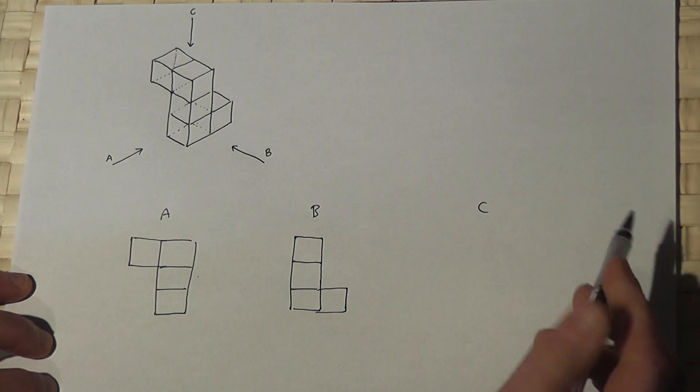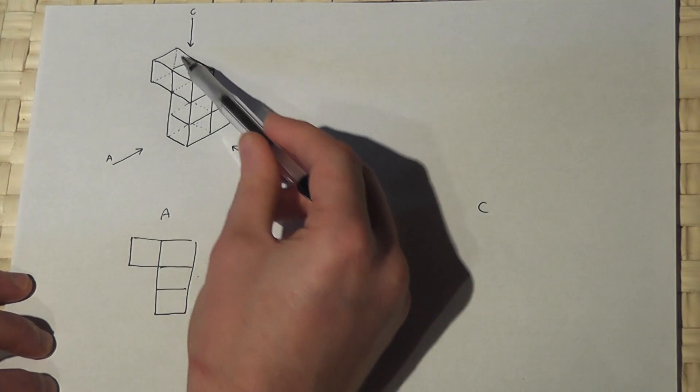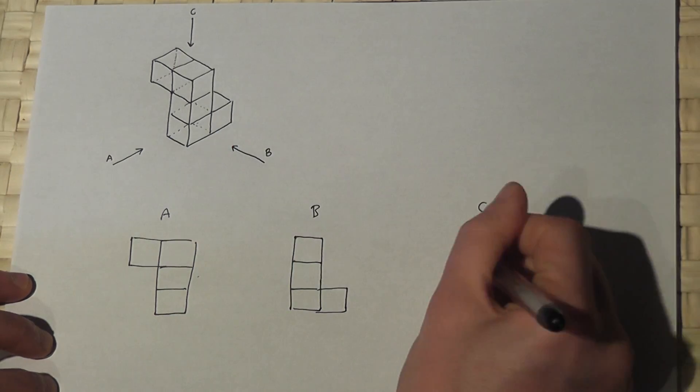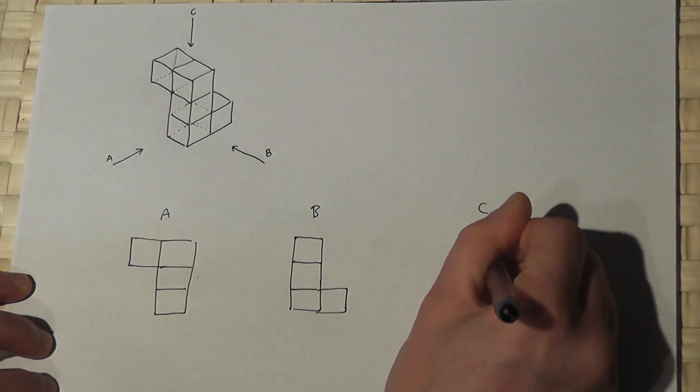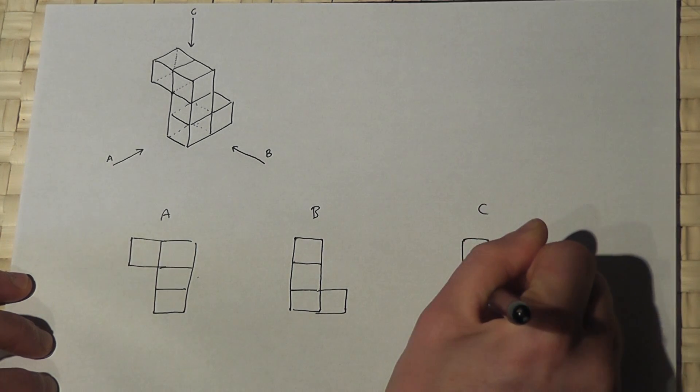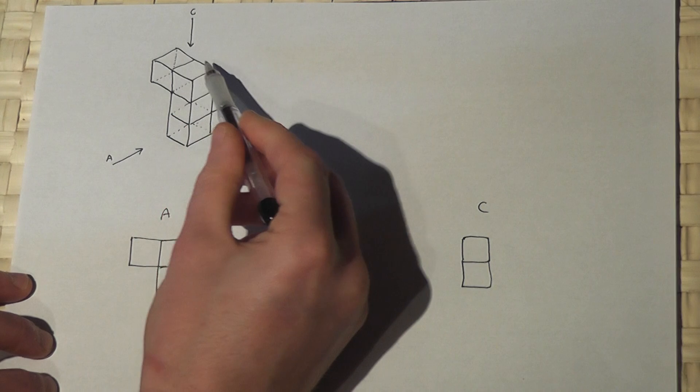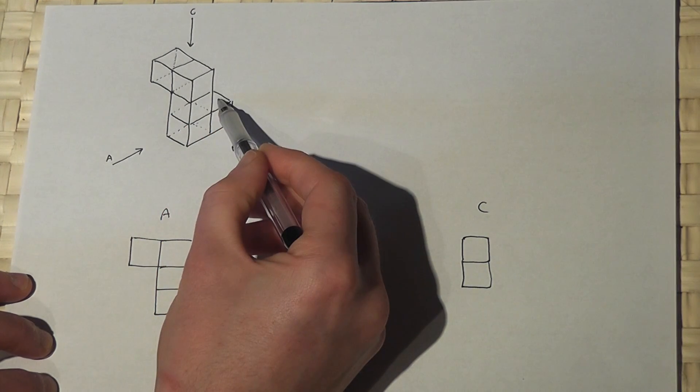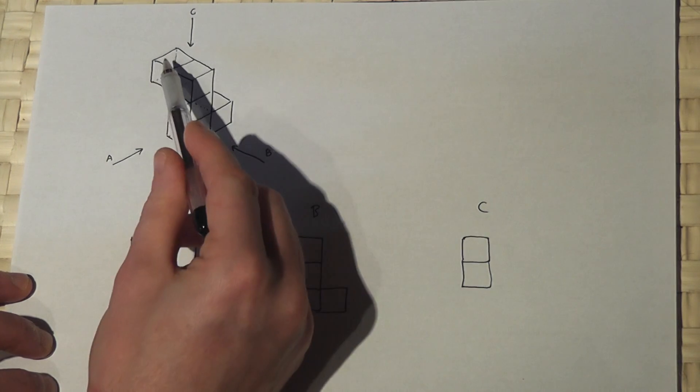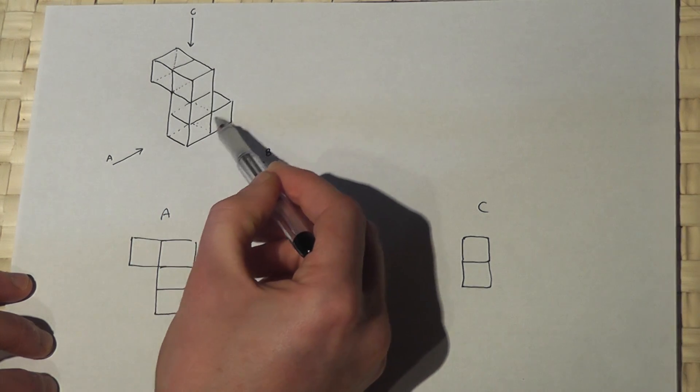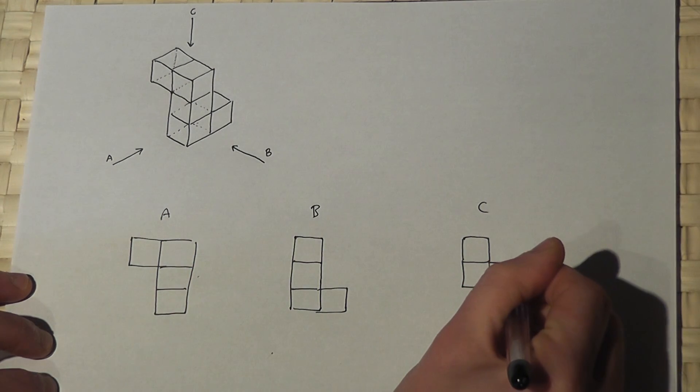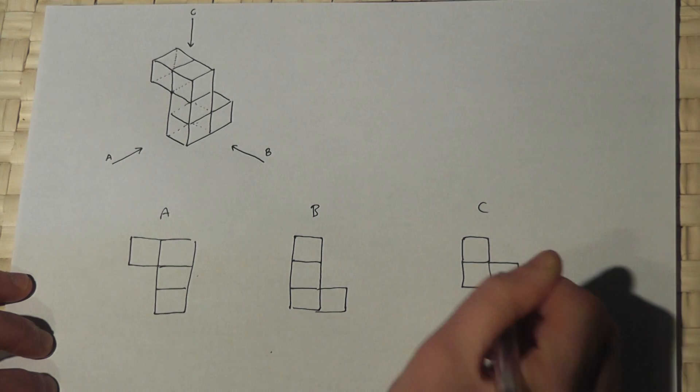And from viewpoint C you'd see the two cubes on the top, which I'll draw at this orientation, but just to the right you would see the one below. So from above, the two there and the one just to the right, so therefore from C it would look something like this.